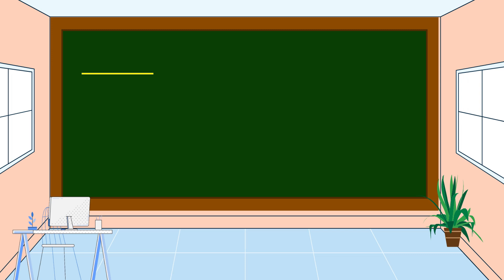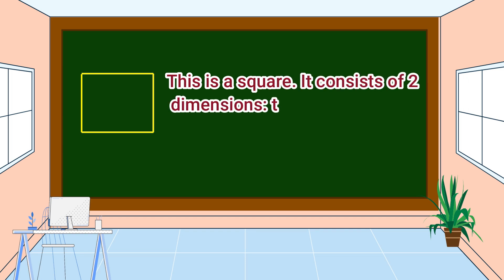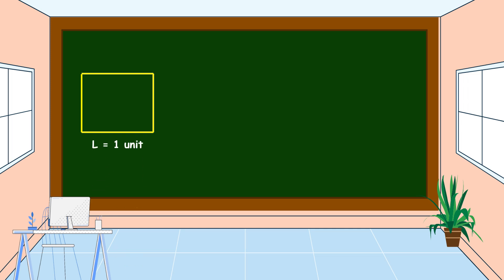If we add another dimension, it looks like this. This is a square. It consists of two dimensions: the length and the width. For example, the length is one unit and the width is also one unit, because this is a square.